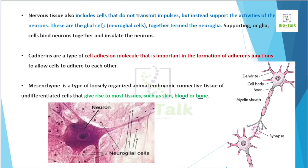The supporting cells in nervous tissue do not transmit impulses — impulse transmission is done by neurons. Instead, they support the activities of neurons. They are called glial cells or neuroglia — together we call them neuroglia. These cells are mainly involved in neurological support and contact areas with neurons.